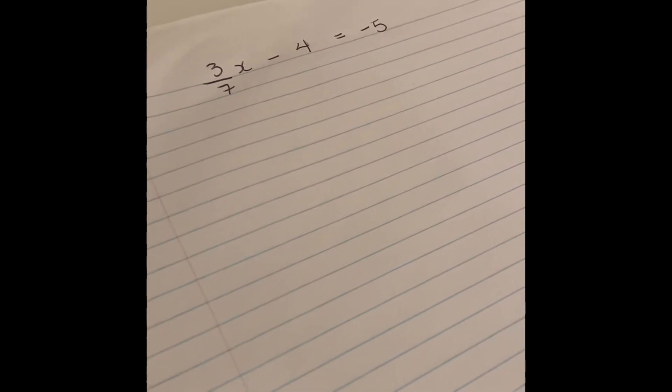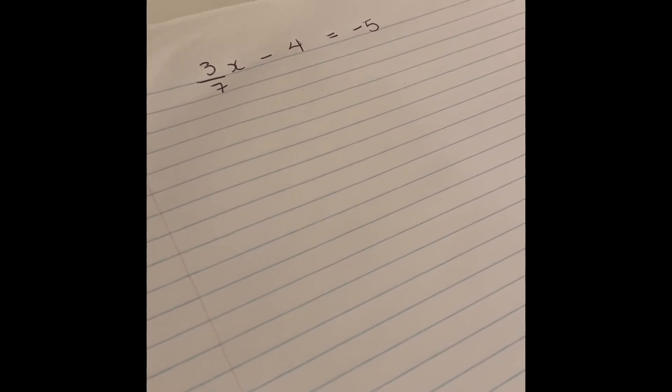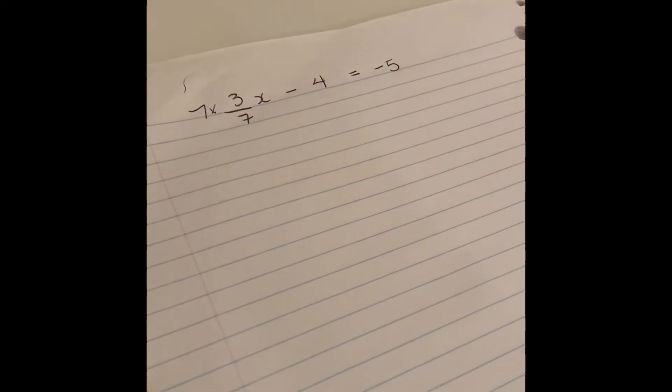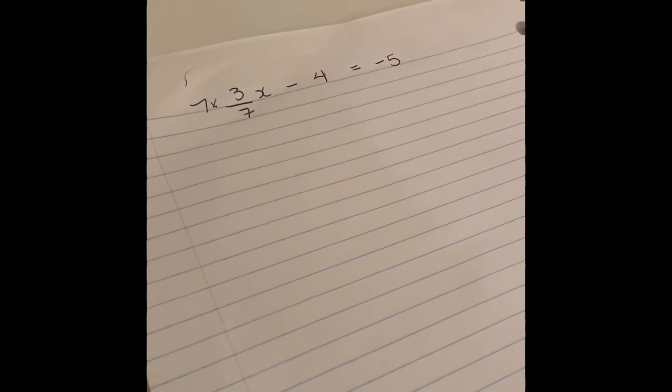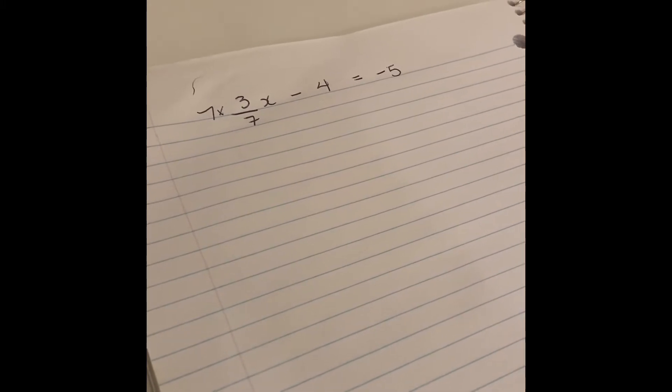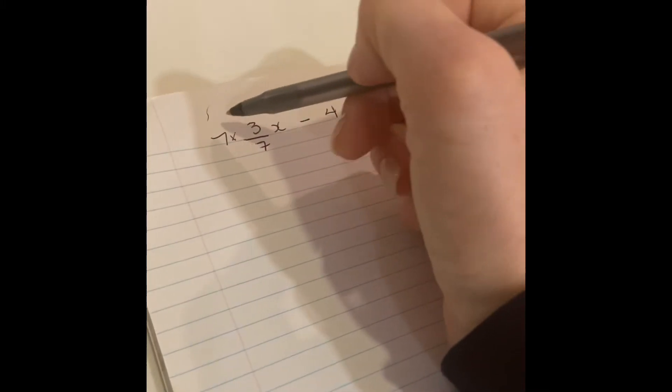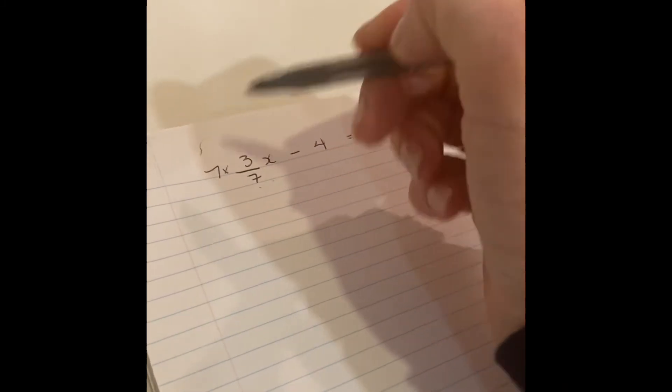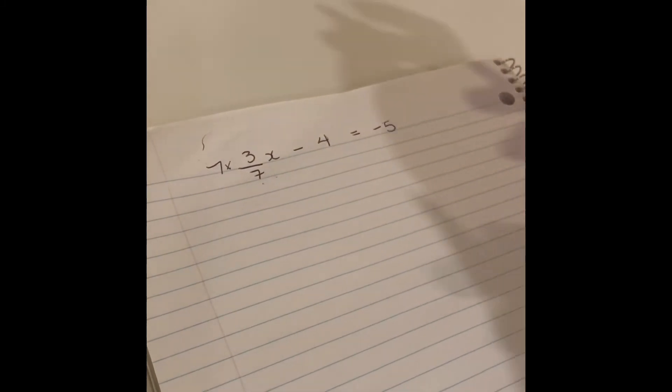If I did that, I would have 7 times 3 divided by 7. 7 times 3 is 21, 21 divided by 7 is 3, so the 7s on the top and the bottom cancel out. But you can't do anything in algebra unless you do the same thing to all parts of the equation.